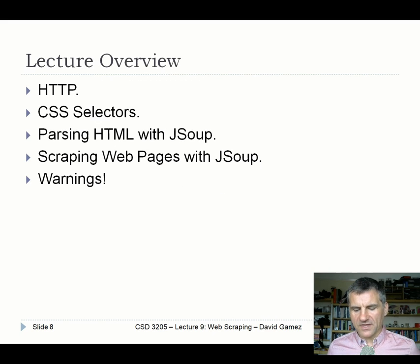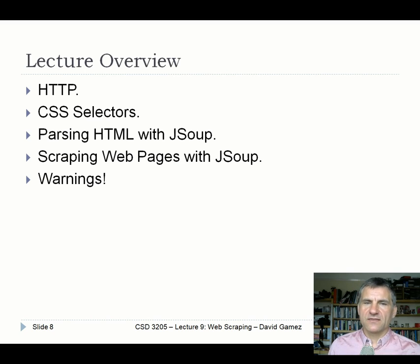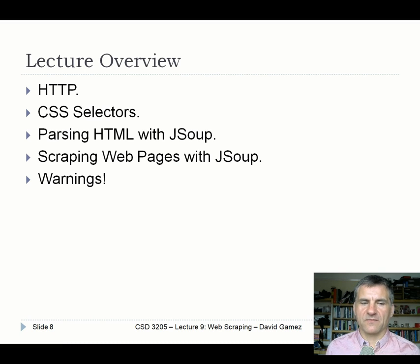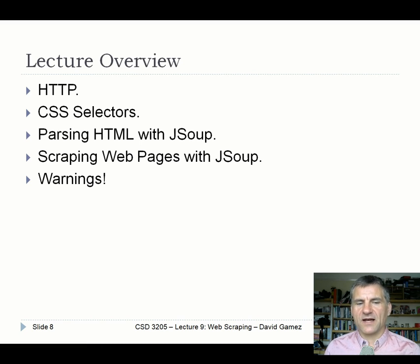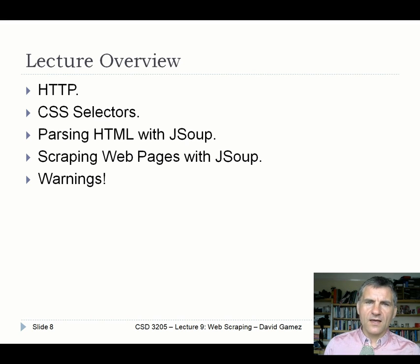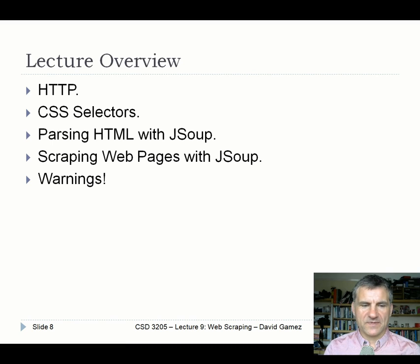I'm going to start with a couple of bits of revision on HTTP and CSS selectors. Then I'll explain how you can use JSoup to extract different bits of data from simple HTML examples I've put together. Then I'll give you the bigger picture about how you actually scrape web pages directly from the URL using JSoup. Finally, at the end of the lecture, I want to give you some warnings because there are legal issues related to scraping data from websites.